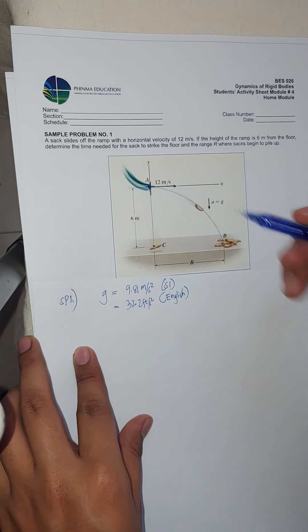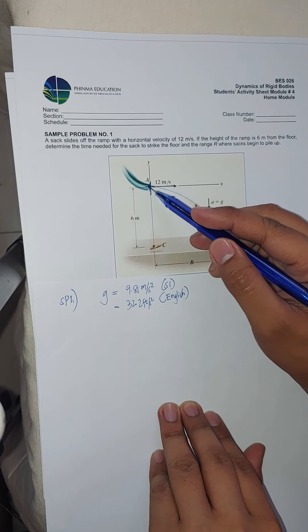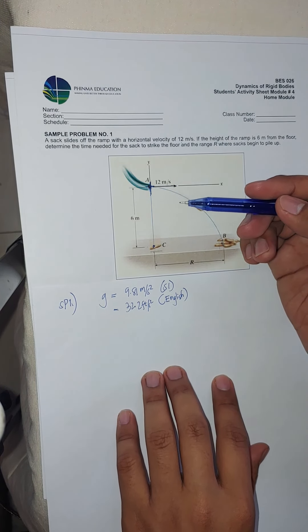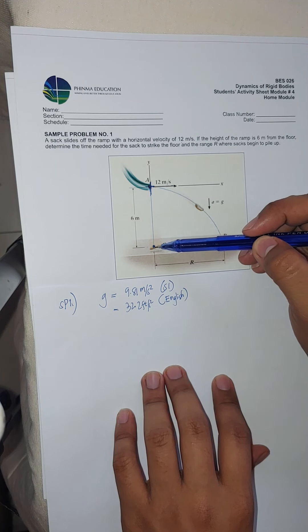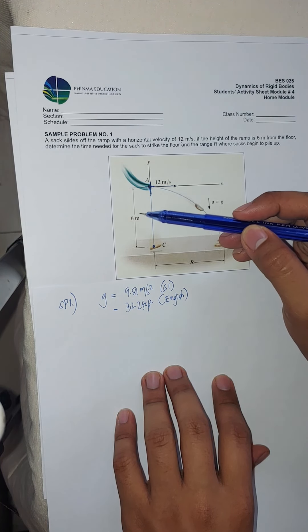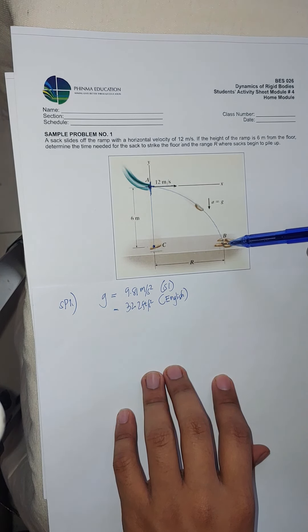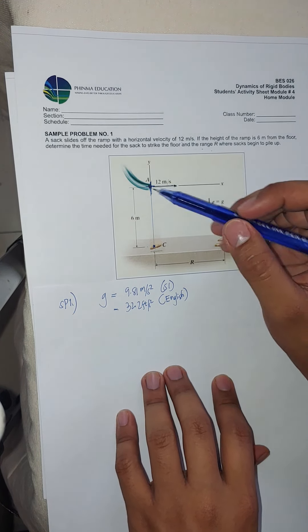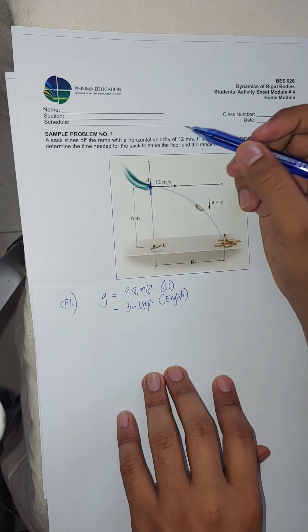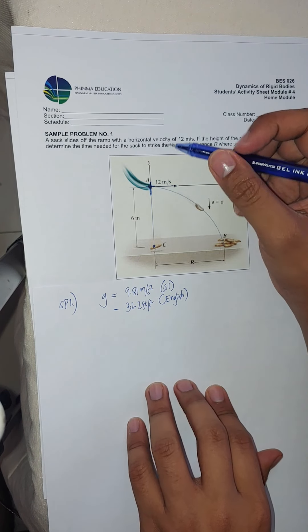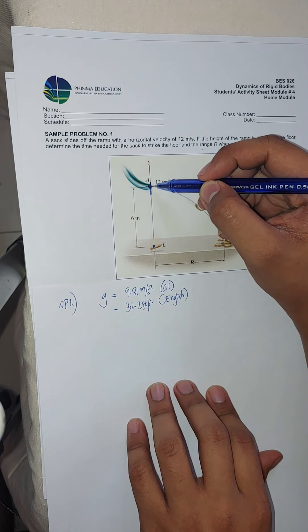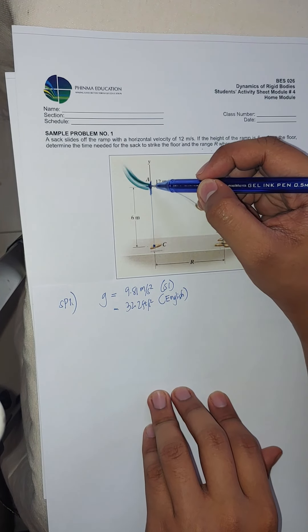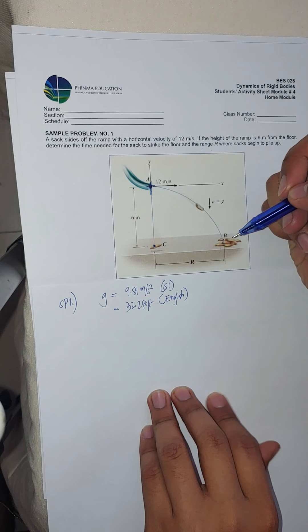Before we begin solving, we should first write or take note of where to put our origin. We can place the origin at the ground level, where upward is 6 meters and the horizontal distance to where the sack lands is the X distance or range. Alternatively, we can put the origin at point A — the launch point — so the distance from origin to the ground is negative 6, and the horizontal distance to the range is positive X or R.